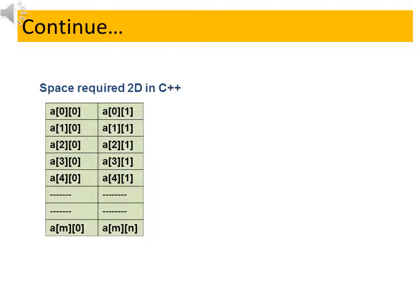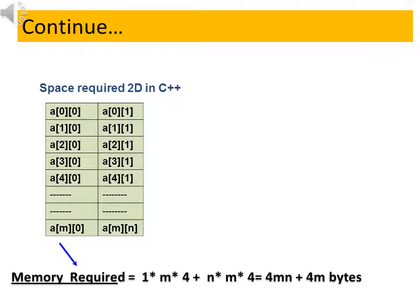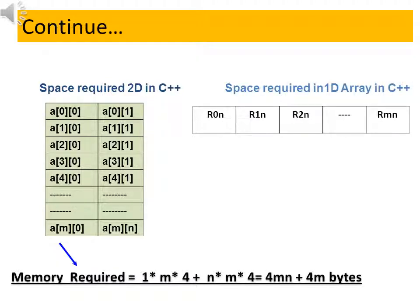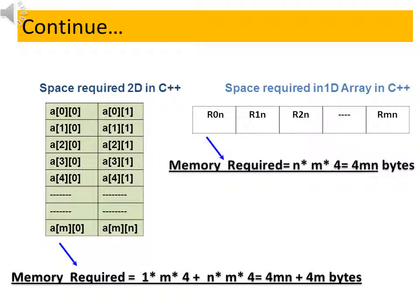For general, if we take m rows and n columns, the array of arrays representation requires 1 into m into 4 plus m into n into 4 equal to 4mn plus 4m bytes. And for one-dimensional mapping takes m into n into 4 equal to 4mn bytes.